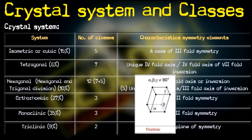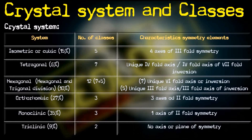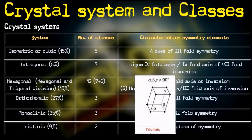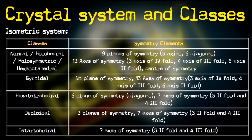The last system is the triclinic system, in which neither the lengths of the axes are equal nor are any of the angles 90 degrees. It is a system with the minimum amount of symmetry — it does not have any axis or plane of symmetry.